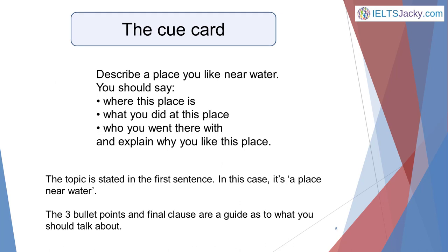Here's an example of an IELTS Speaking Part 2 cue card. Describe a place you like near water. You should say: where this place is, what you did at this place, who you went there with, and explain why you like this place. The topic is stated in the first sentence — in this case, a place near water. The three bullet points and final clause are a guide as to what you should talk about.